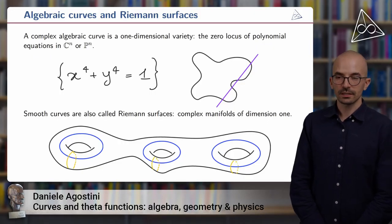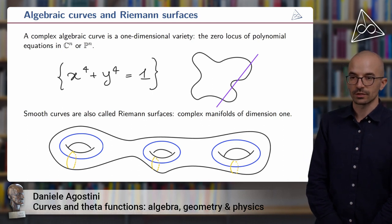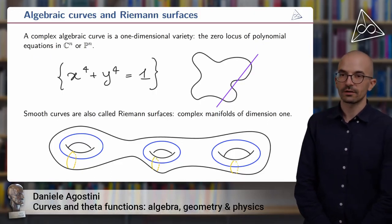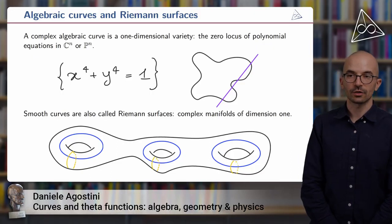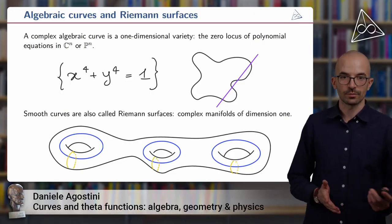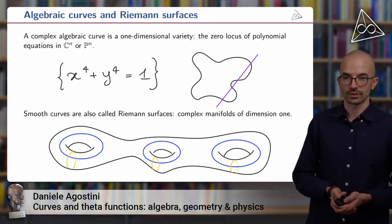On the other side, any compact complex manifold of dimension one, so any Riemann surface, is also an algebraic curve. So this is a place where we have a very fruitful marriage between algebraic and complex geometry, meaning that we can use both algebraic and complex methods to study these objects.